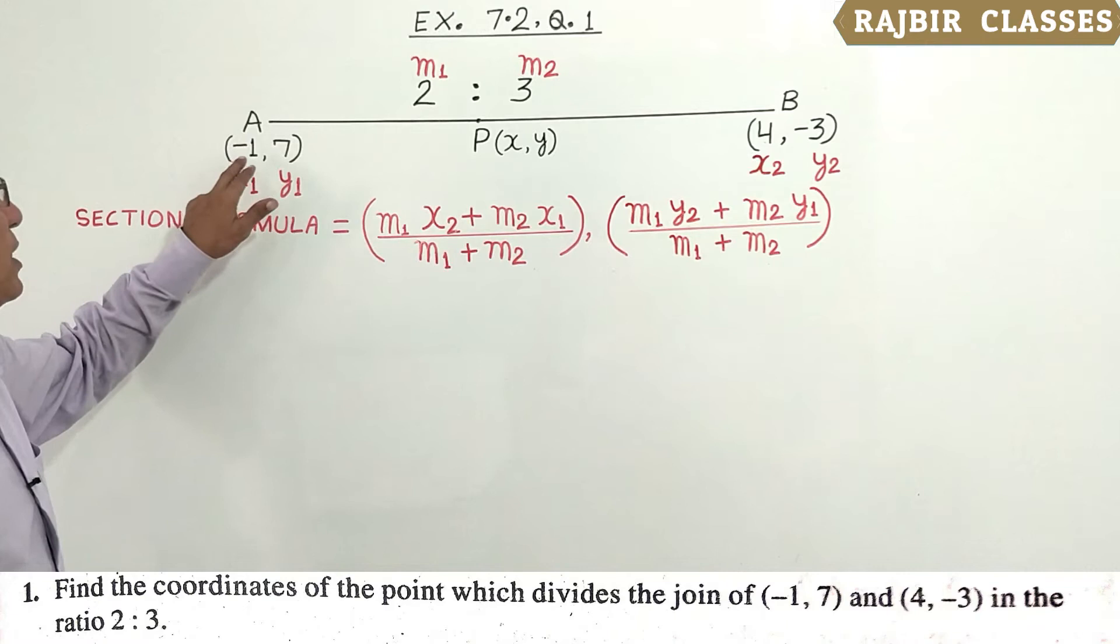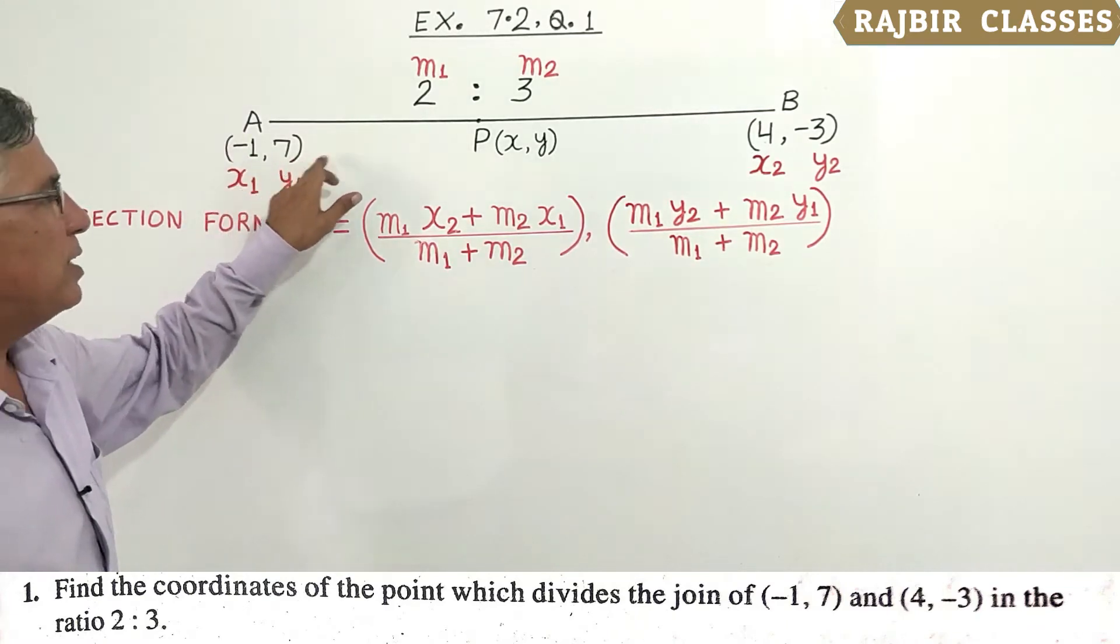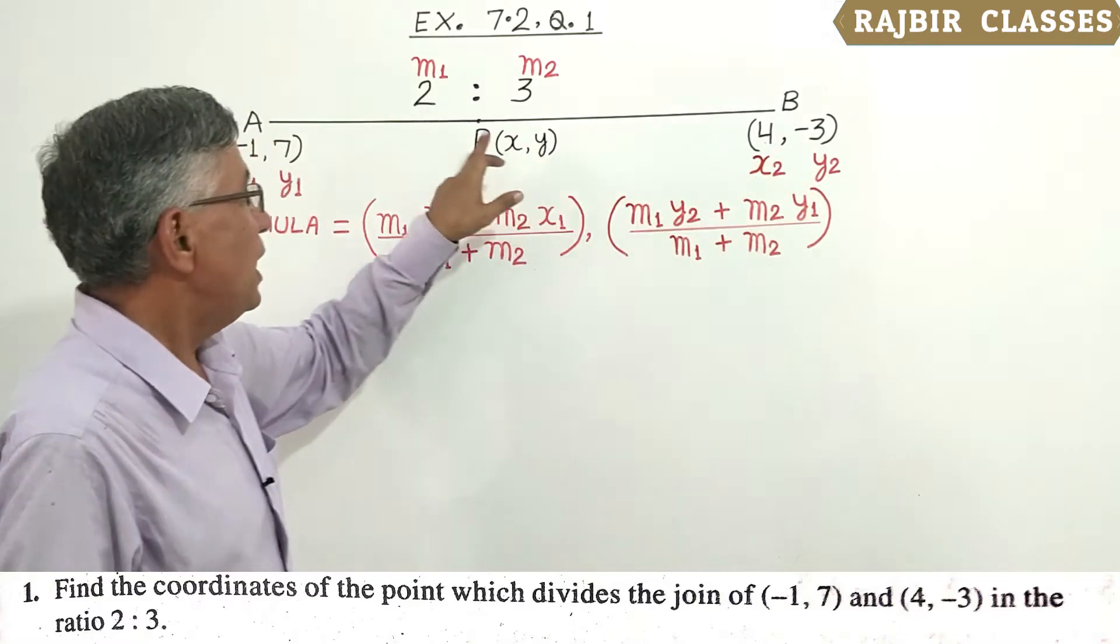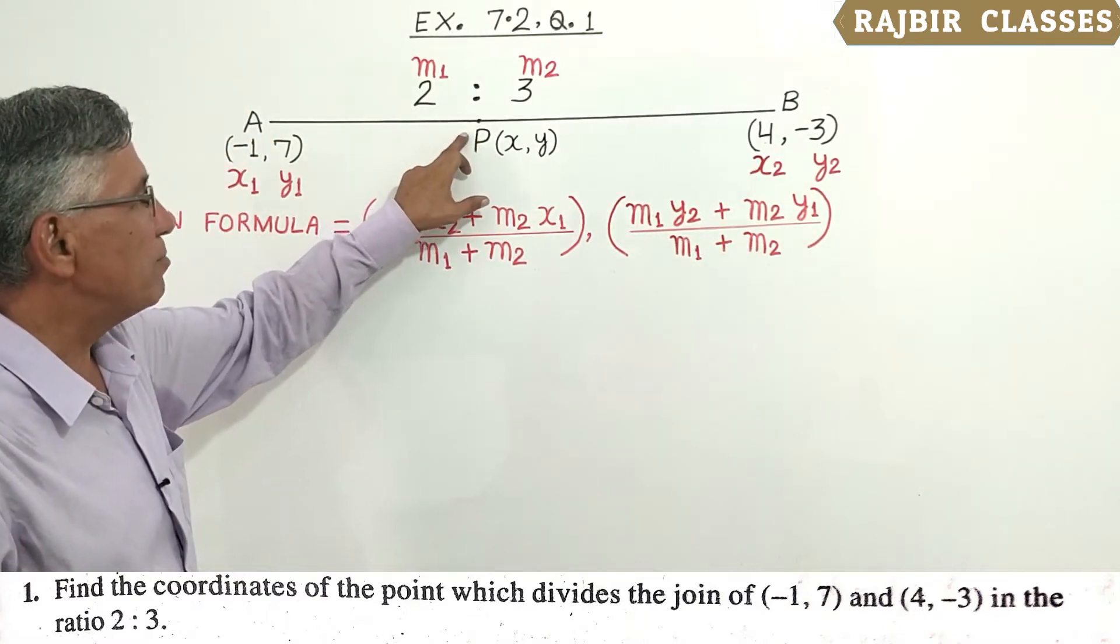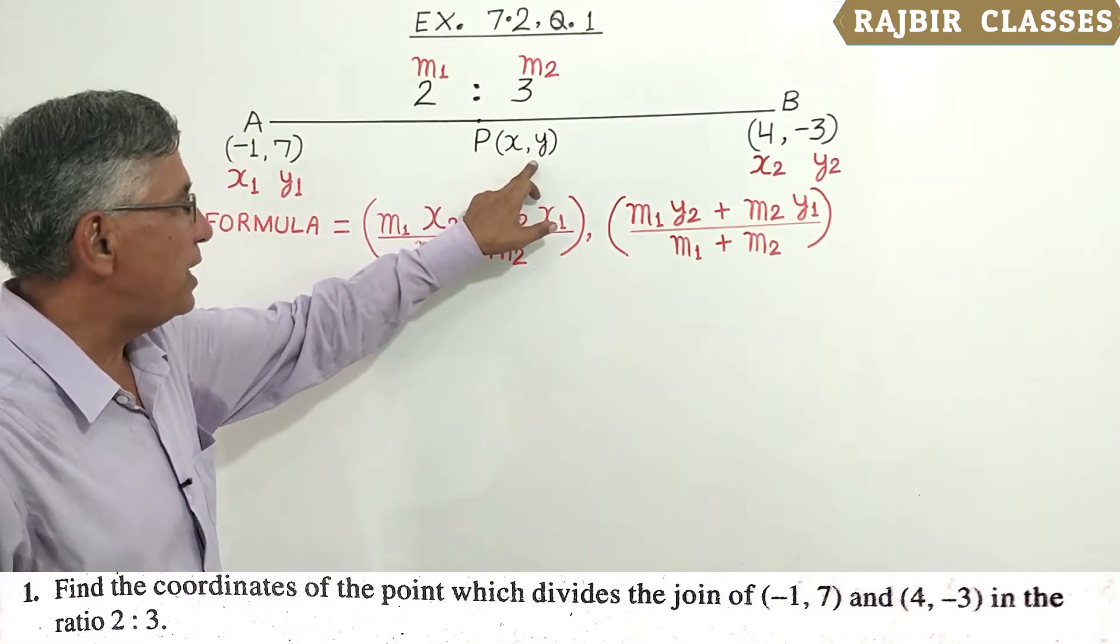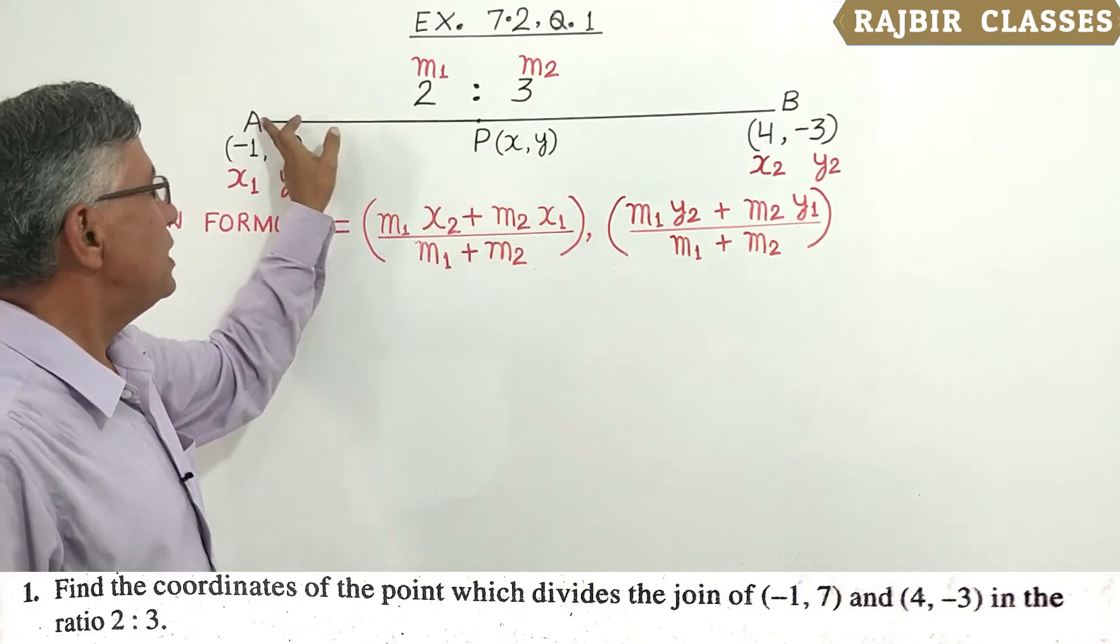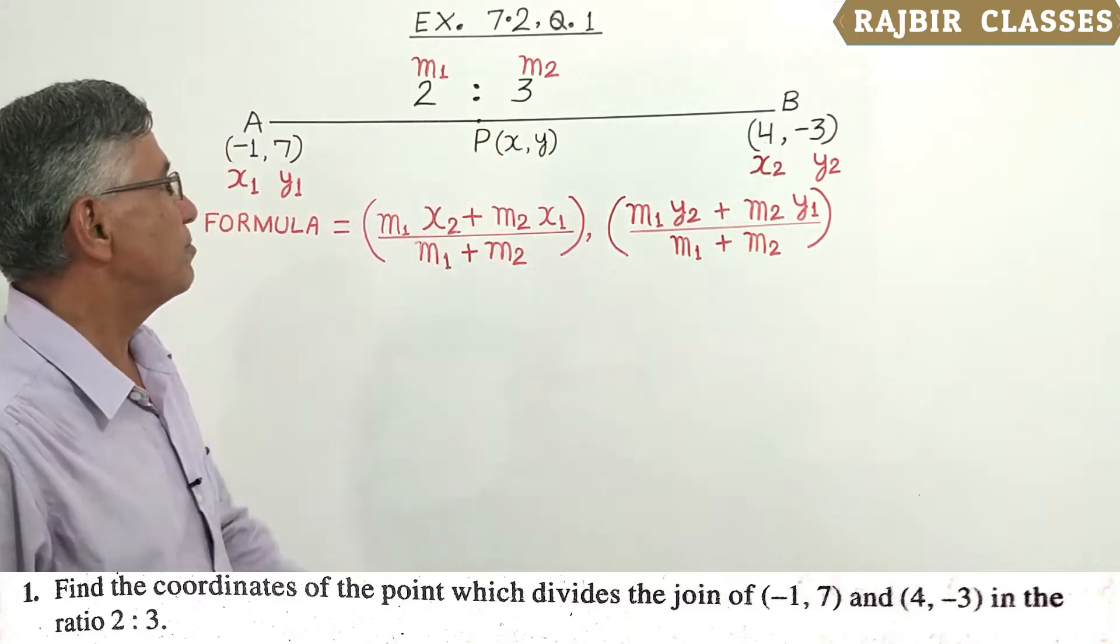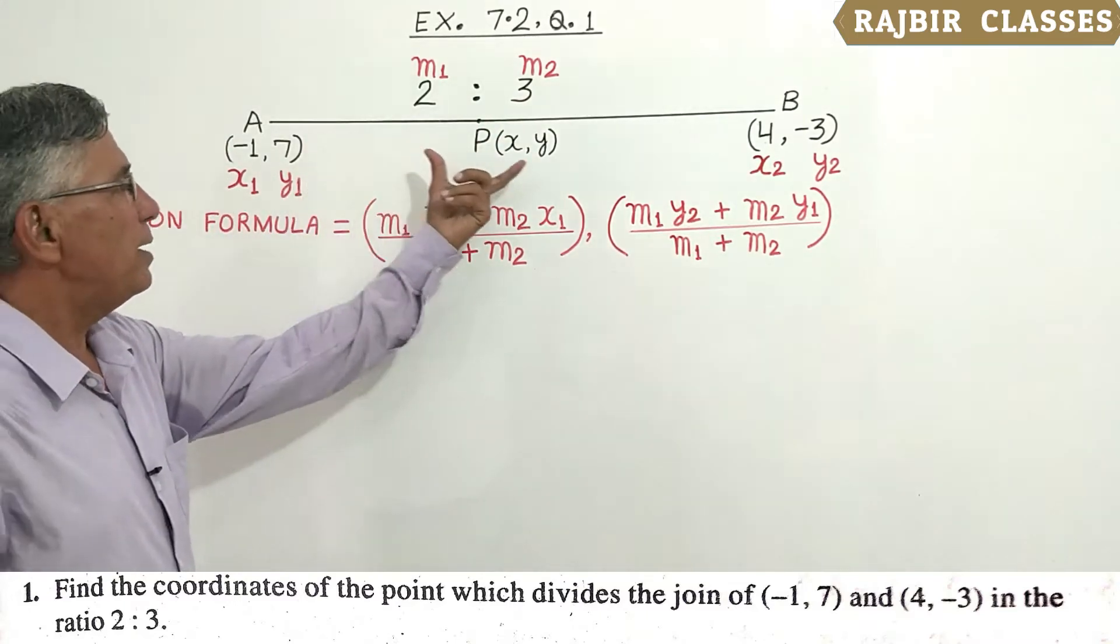We have two coordinates: (-1, 7) and (4, -3). Point P divides line AB, and we need to find P's coordinates. The ratio AP to PB is 2:3.